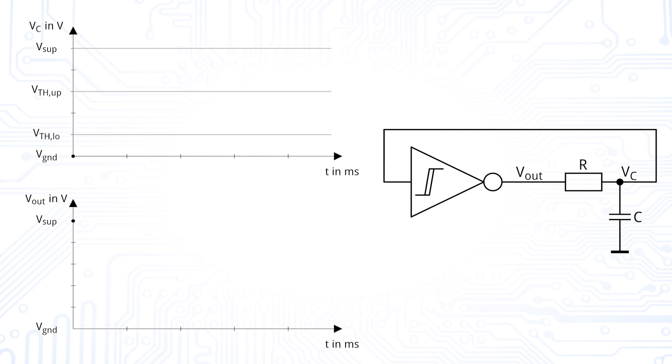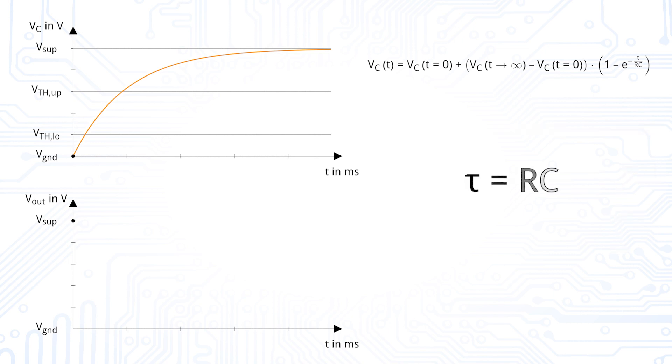As our Schmitt trigger outputs the supply voltage, we charge our capacitance by the exponential function that we already know from the capacitor charging equation. The time constant tau is defined as R times C.